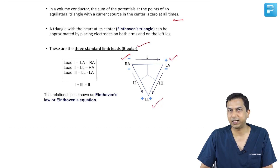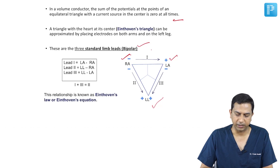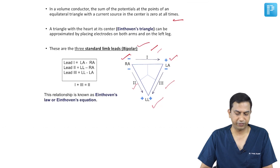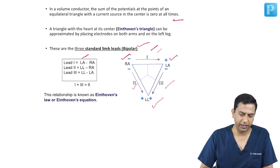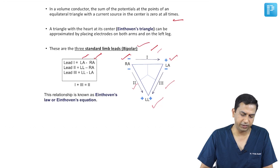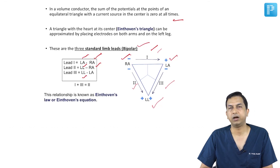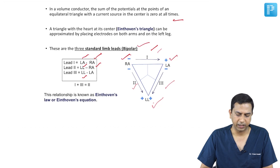The three standard limb leads are Lead 1, Lead 2, and Lead 3. Lead 1 records the potential difference between the left arm and the right arm. Lead 2 records the difference between the left leg and the right arm. Lead 3 records the potential difference between the left leg and the left arm.